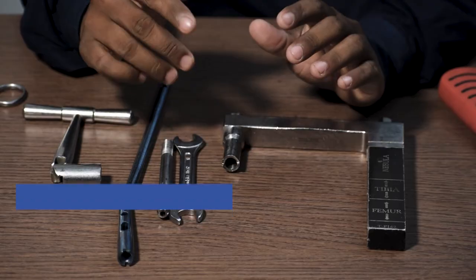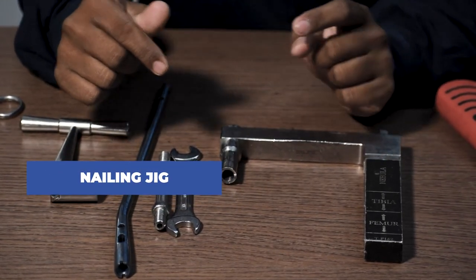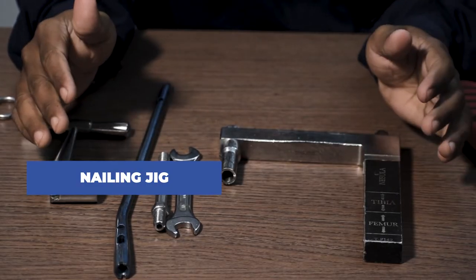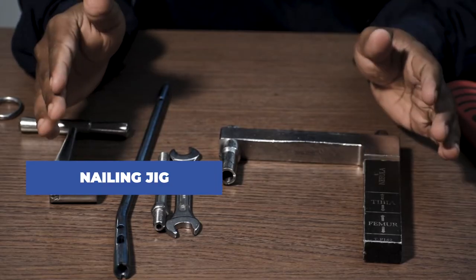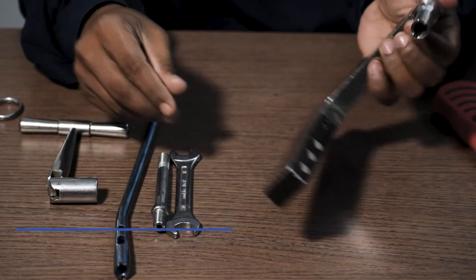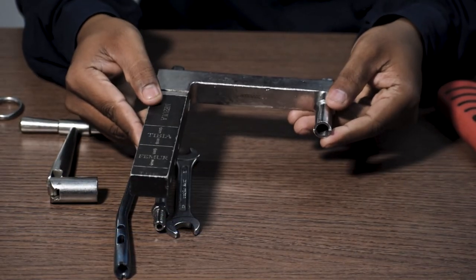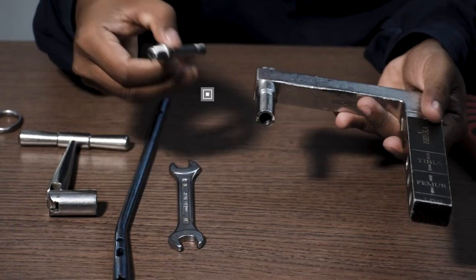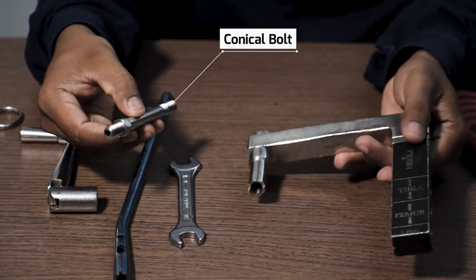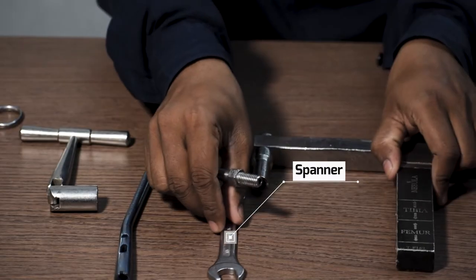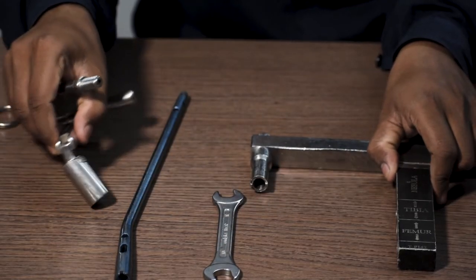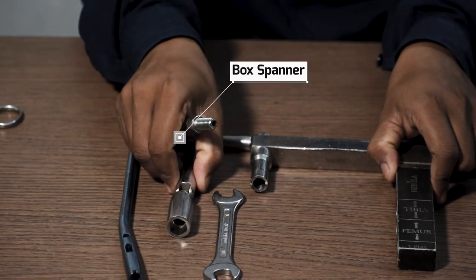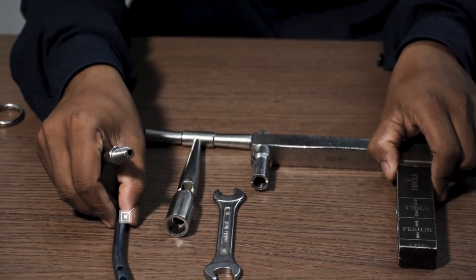Now let us come to the attachment of tibia nail with the help of a jig. This is a tibia jig. This is a conical bolt. This is a spanner. This device is called a box spanner. And this is the tibia nail.